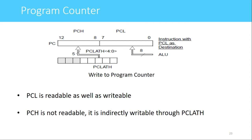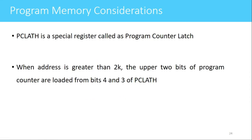PCH is not directly readable. If you want to make changes to the PCH register, you have to use a register called PCLAT. That PCLAT register is used for indirectly writing to the PCH register. PCLAT is a special register called the program counter latch, and using this register we can write to the higher 5 bits of the program counter. When the address is greater than 2 kilobytes, the upper 2 bits of the program counter are loaded from bits 4 and 3 of the PCLAT register.